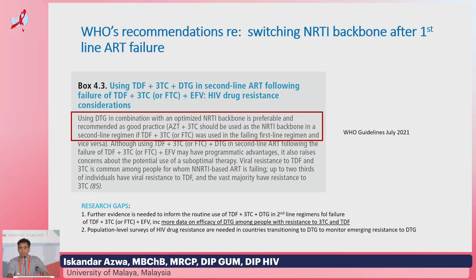These are specific recommendations around switching the NRTI backbone in the WHO guidelines, recently updated in 2021. Using dolutegravir in combination with an optimized NRTI backbone is preferable and recommended as good practice. AZT and 3TC should be used as the NRTI backbone in a second-line regimen if tenofovir and 3TC or FTC was used in the failing first-line regimen, and vice versa.